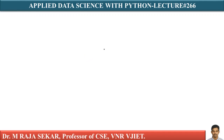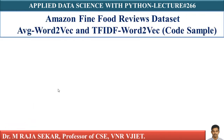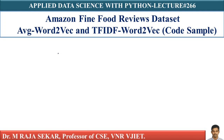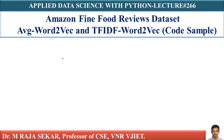Welcome to Raj Shaker Classes on Applied Data Science with Python. This is lecture number 266. In this lecture I will continue my discussion on the Amazon Fine Food Reviews dataset. We will try to understand average word2vec, TF-IDF word2vec code samples, n-grams, and bigrams. Before this lecture, please go through lecture number 259 in which I discussed these two concepts.